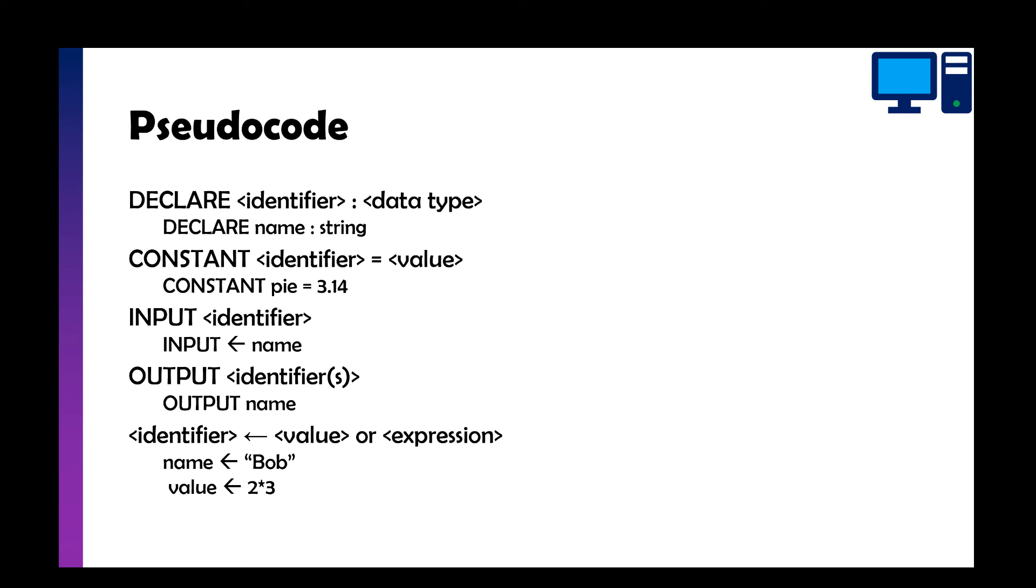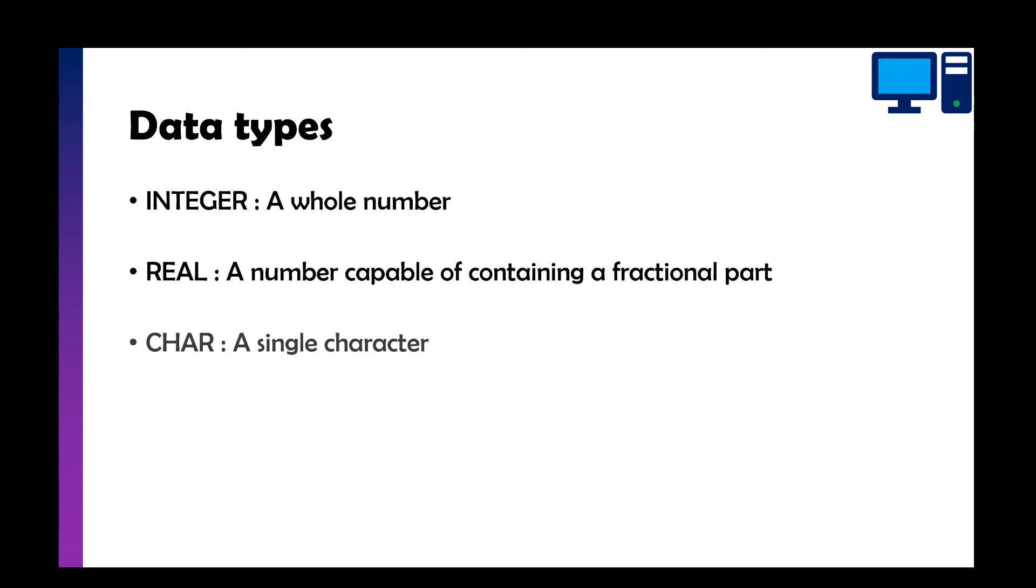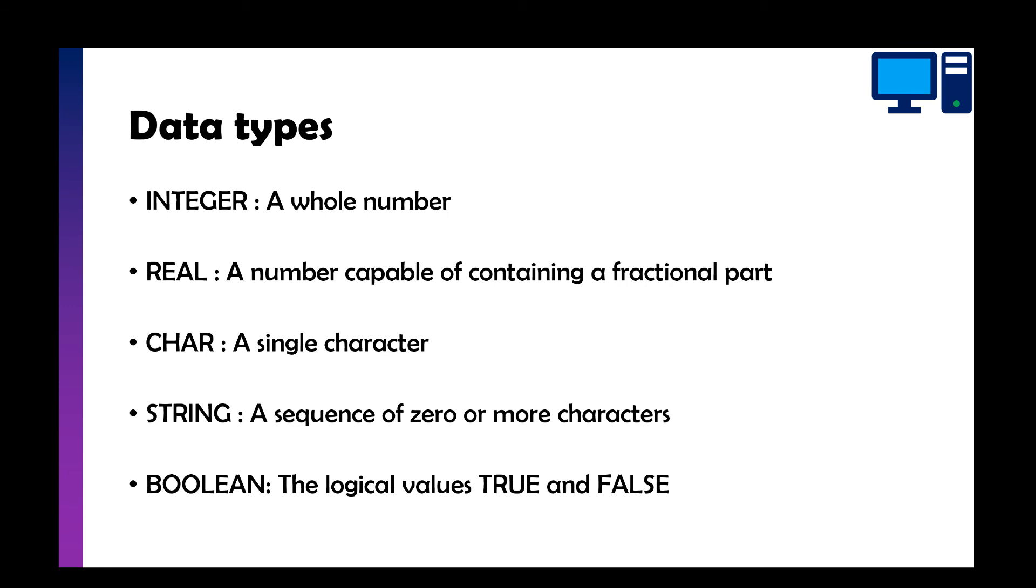Then if you want to output identifier, output variable, we put OUTPUT and the name of the identifier. So output temperature, output name, output age. And then if we want to add a value to our variable, so this is something that's like built into the program, hard coded, you put name arrow Bob or value arrow two times three. This is where it's not using an input. And then we've got our data types. So we've got an INTEGER which is a whole number, a REAL which is a number capable of containing a decimal, a CHAR which is a single character that can include like exclamation marks as well, a STRING is a series of letters including characters and you can also have numbers in as well, and a BOOLEAN is true or false.